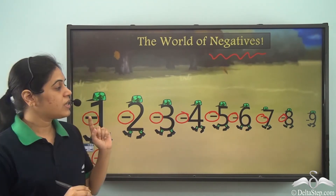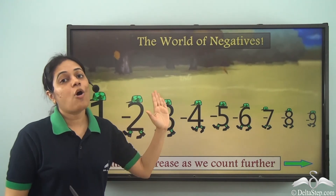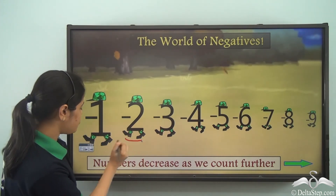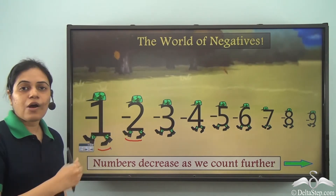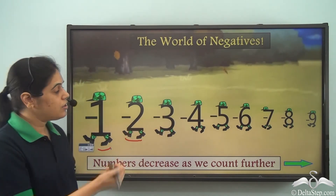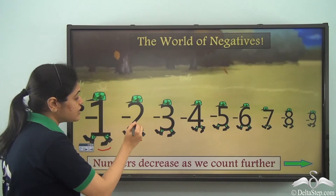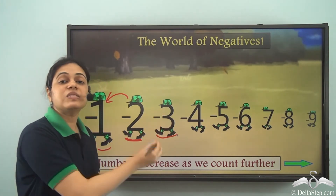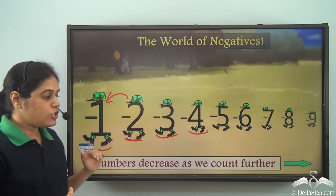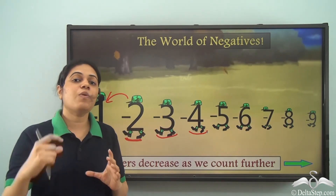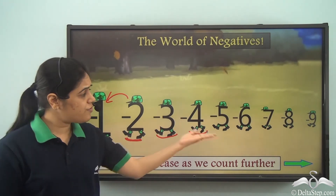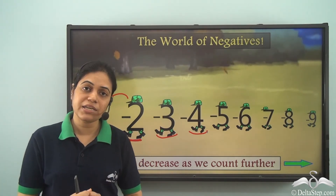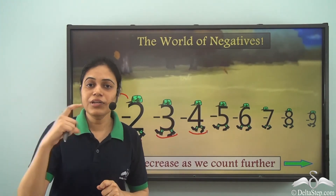They do not keep any secrets. Another important thing is that quite opposite to the world of positives, these numbers decrease as we count further. Negative two is smaller than negative one. When we count: negative one, negative two, negative three and so on — the number which comes later is smaller than the number which comes before. Negative three is smaller than negative two. Negative four is smaller than negative three. As we count further, numbers become smaller and smaller. That is why over here everything is opposite to the world of positives.